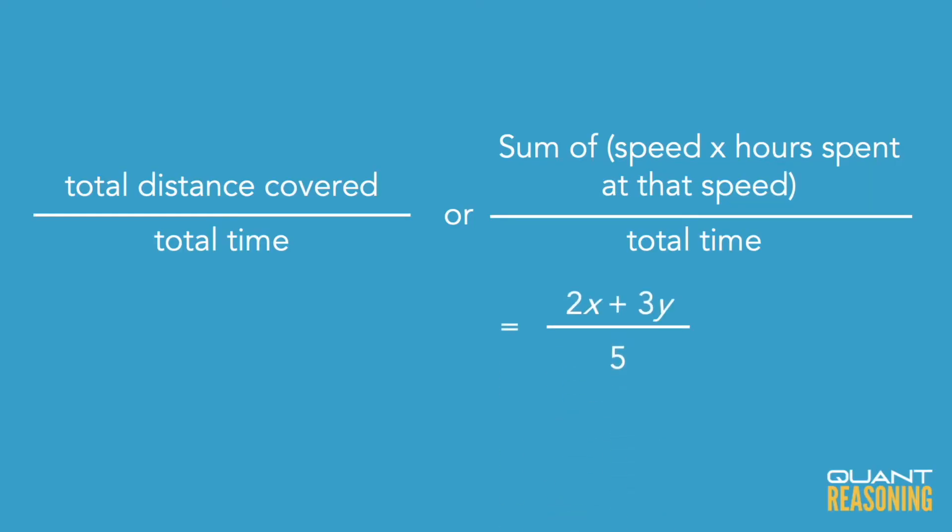In this case, we know that Marta spent two hours at x miles per hour and three hours at y miles per hour, so the total distance covered would be 2x plus 3y, and you divide that by the total amount of time, which is five hours.